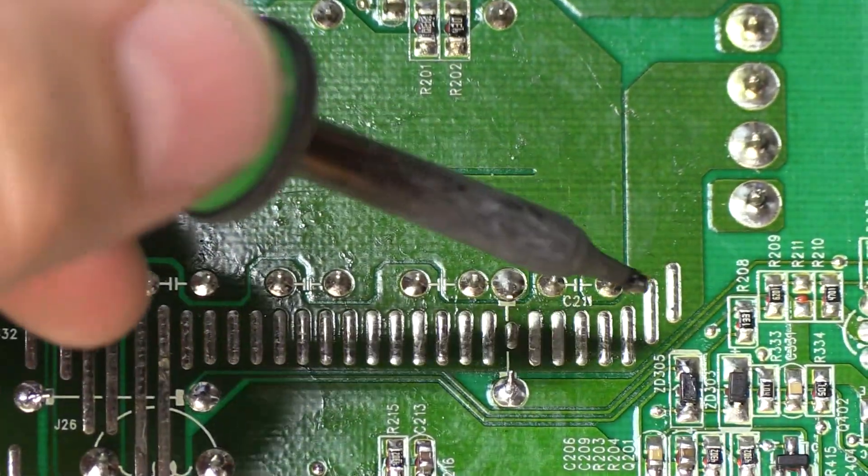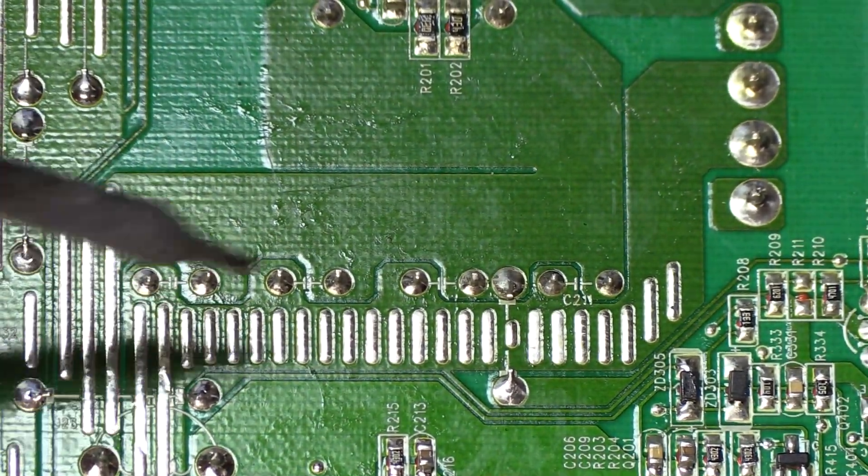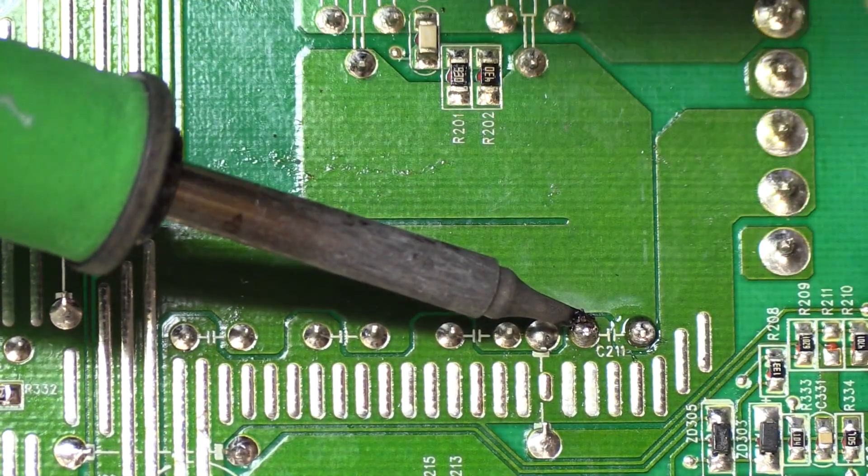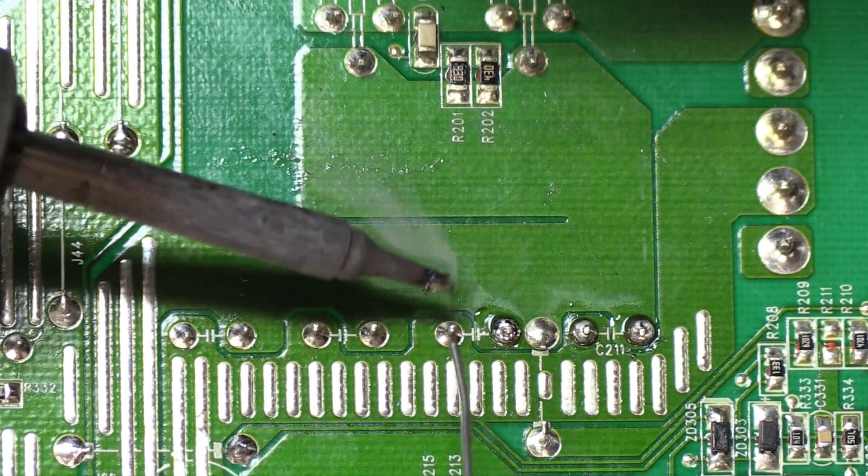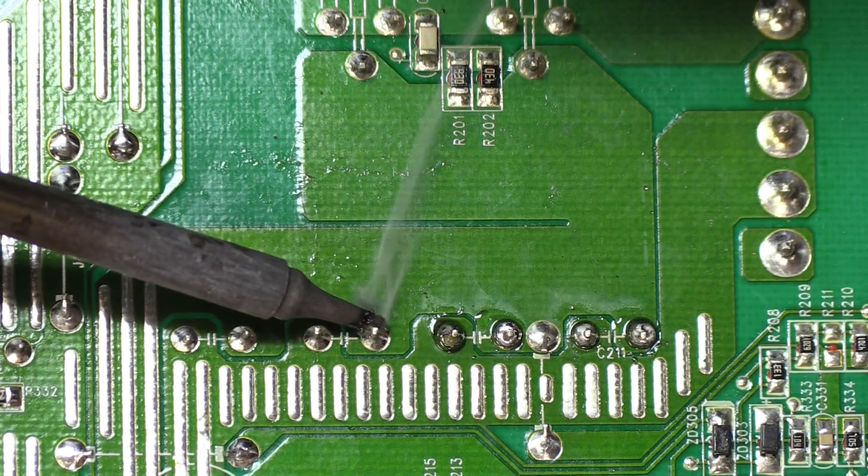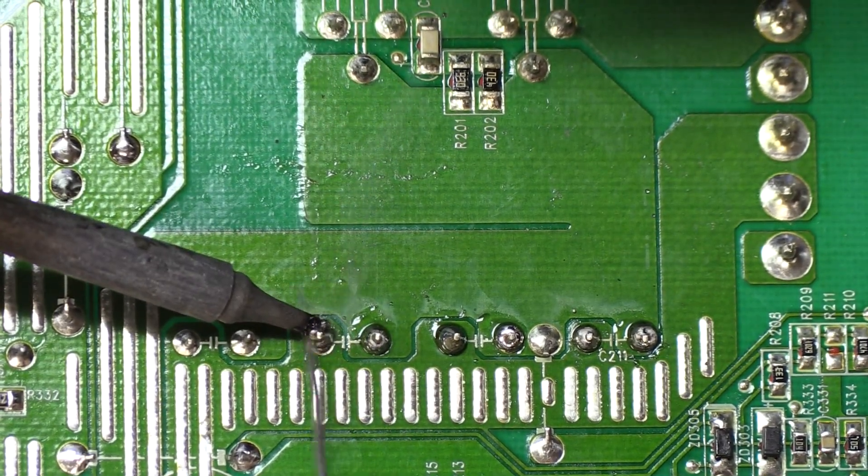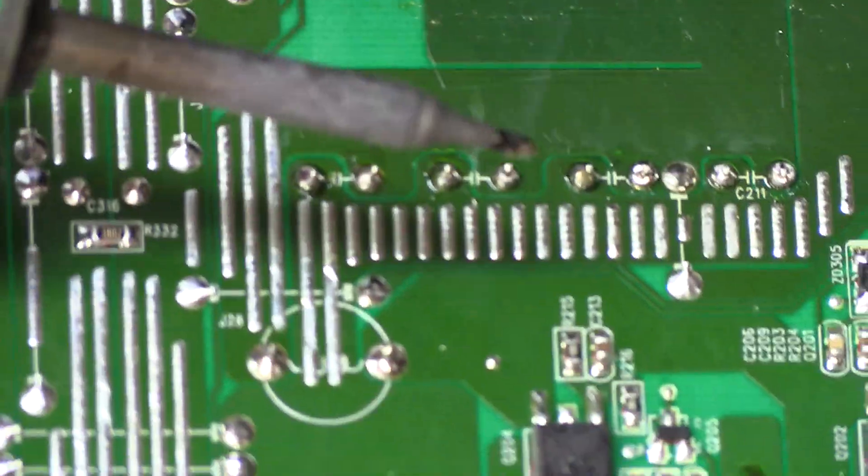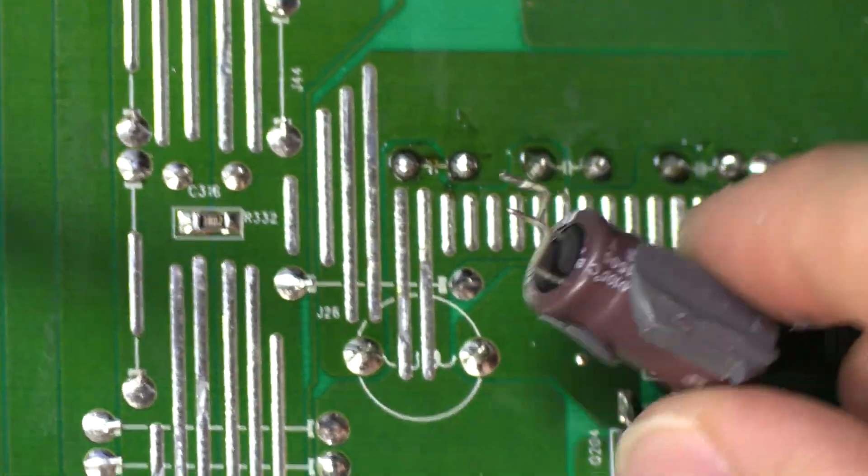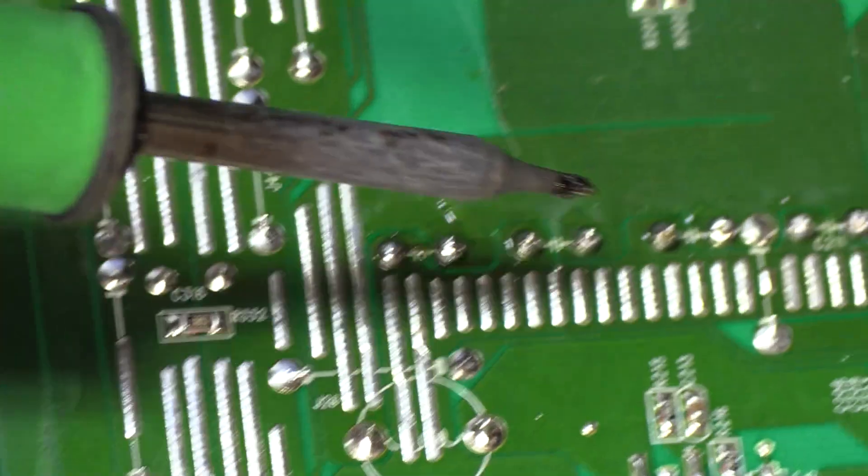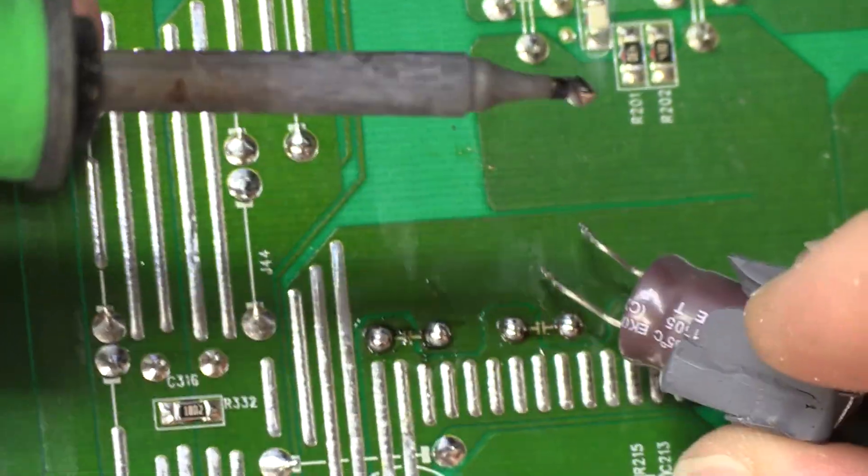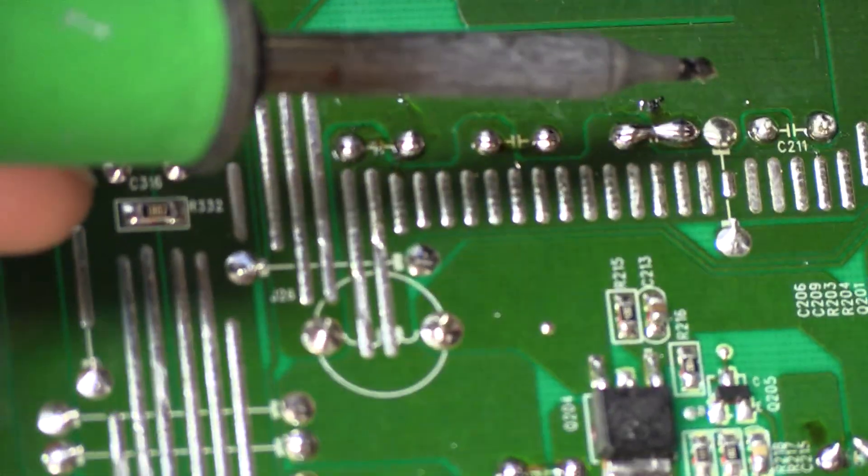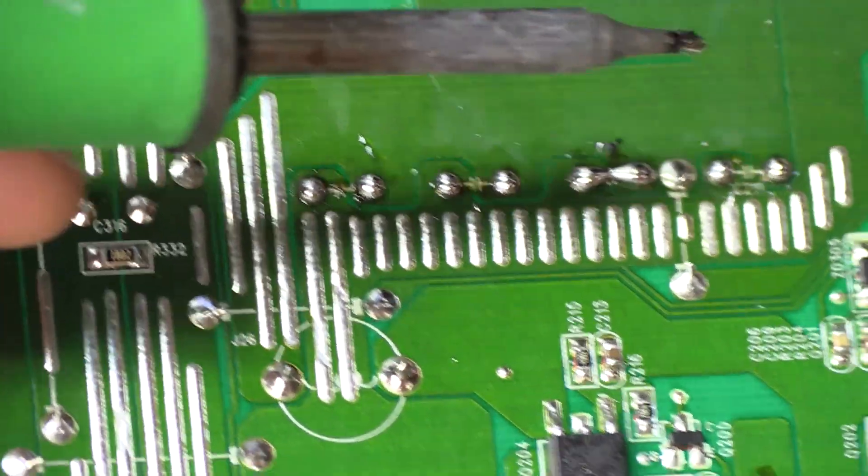Now we're going to shift over to this row over here and this entire row are the four that were bulging. So what we'll do here is we're just going to go ahead and start adding solder to all four capacitor legs or all eight I guess. And then we'll go back and remove them one by one. First one. Second one. Third one. And fourth one.